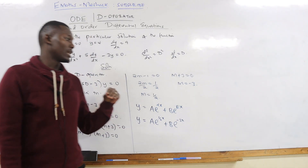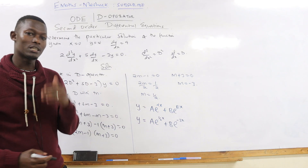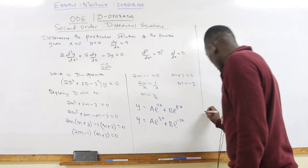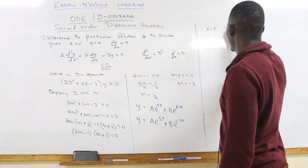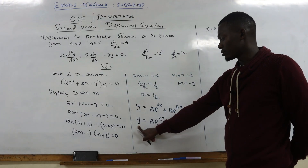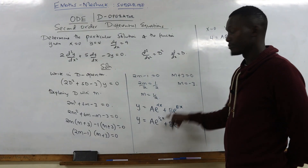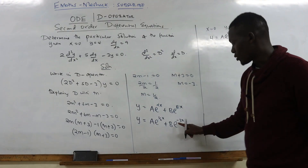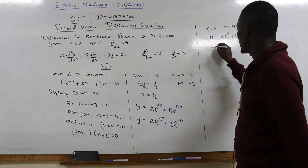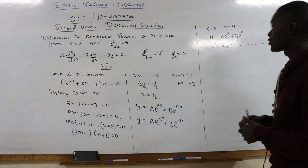Finding the particular solution requires finding the values of A and B, which is why we've been given initial conditions. Taking the first condition — when x = 0, y = 4 — replace Y with 4 and X with 0. Since e^0 = 1, we get 4 = A + B. We cannot yet solve for A and B individually.